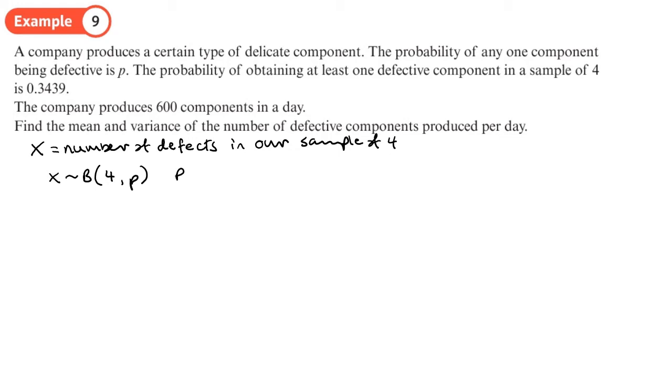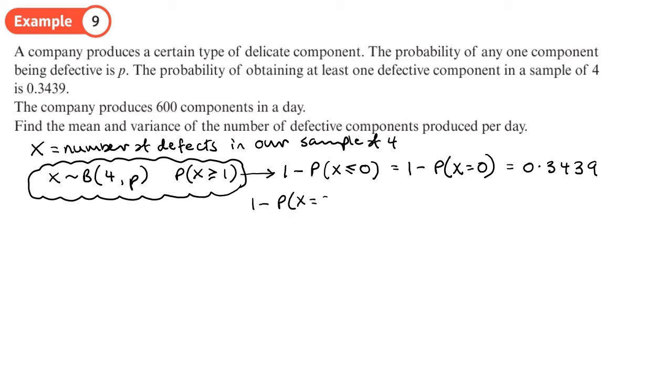And the probability of obtaining at least one defective component. In this case success is a defect. So at least one means one or more. So from these two bits of information, we want to be able to work out what p is. So the first thing to do is to change this into one minus the probability that X less than or equal to zero. And in fact, that's the same as one minus the probability equal to zero. And we know that this is equal to, given in the question, 0.3439. So let's just write this down here, one minus the probability X equals zero, 0.3439.